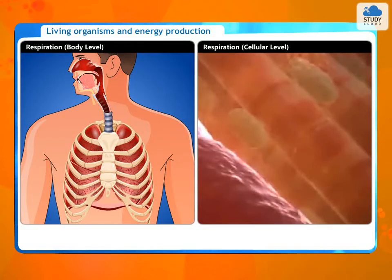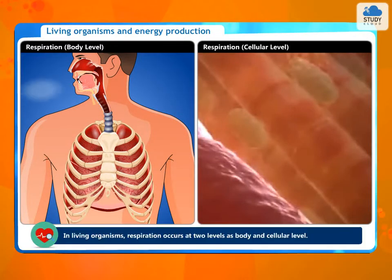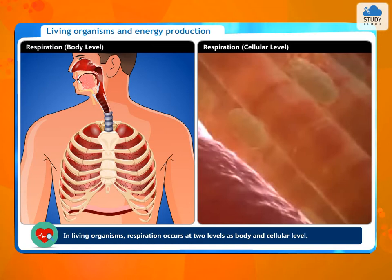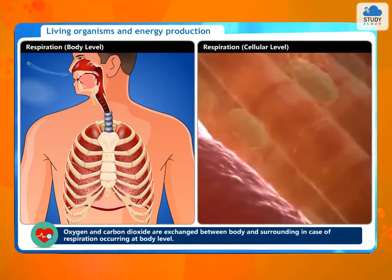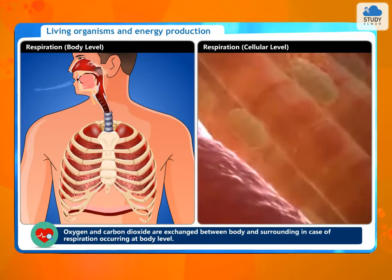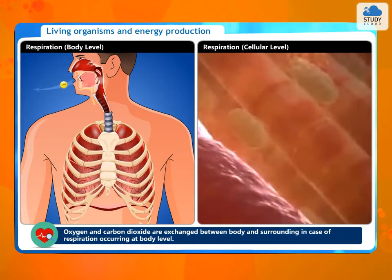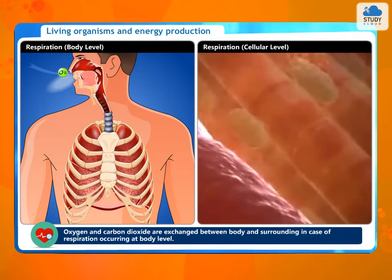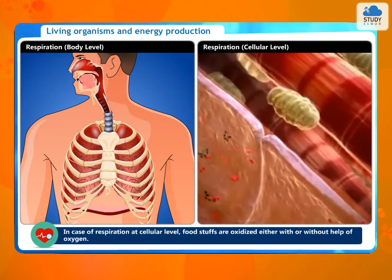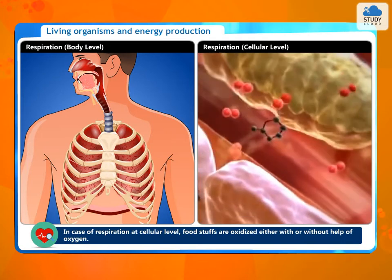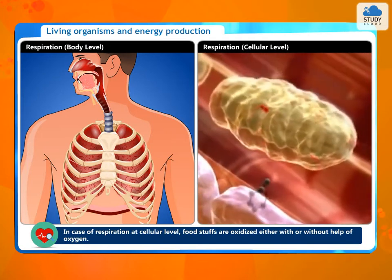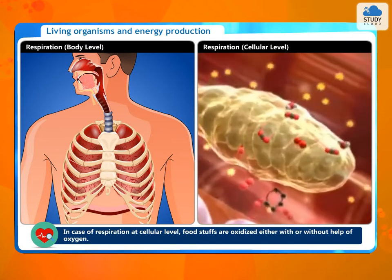In living organisms, respiration occurs at two levels: body level and cellular level. Oxygen and carbon dioxide are exchanged between the body and its surroundings in the case of respiration at body level. In the case of respiration at cellular level, foodstuffs are oxidized either with or without the help of oxygen.